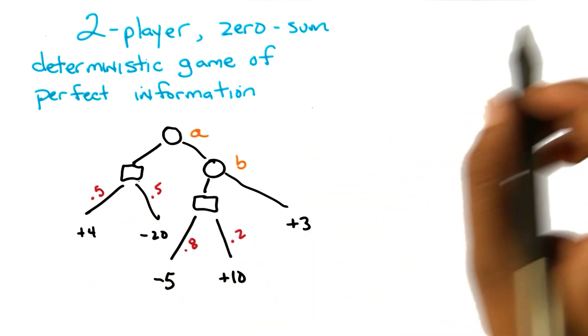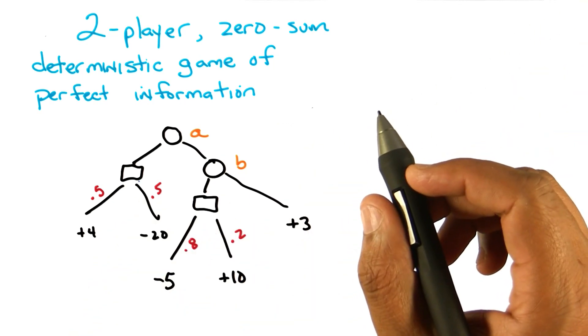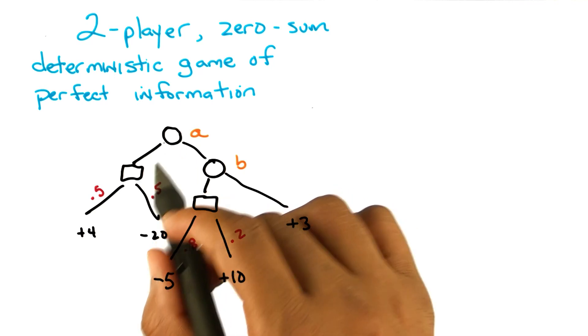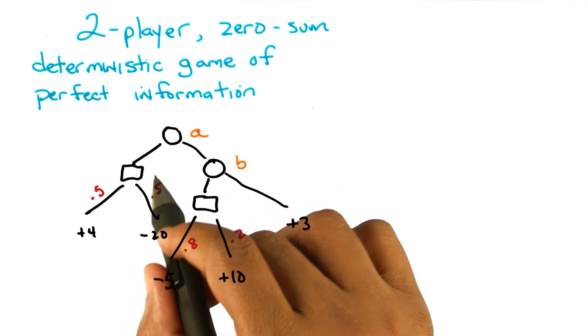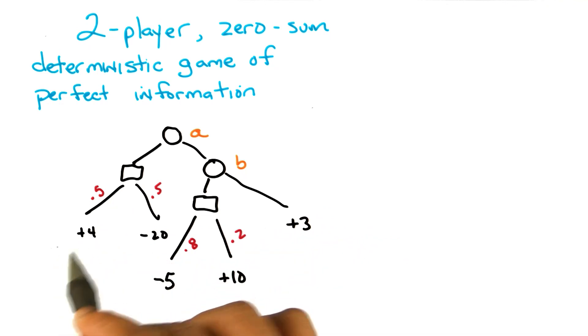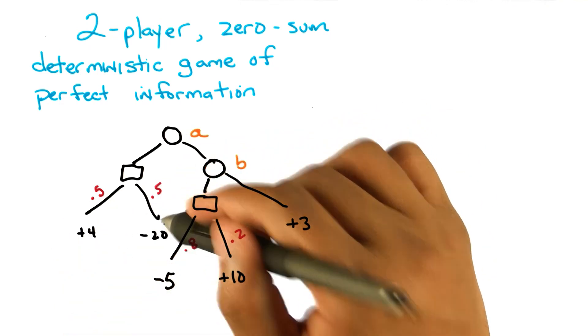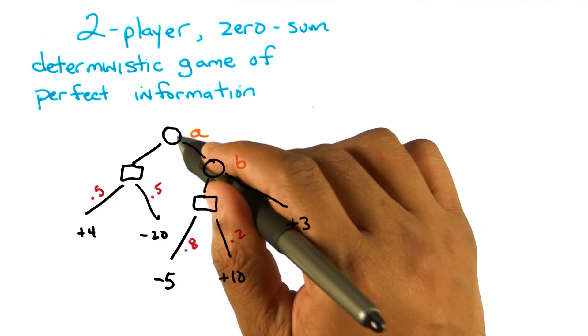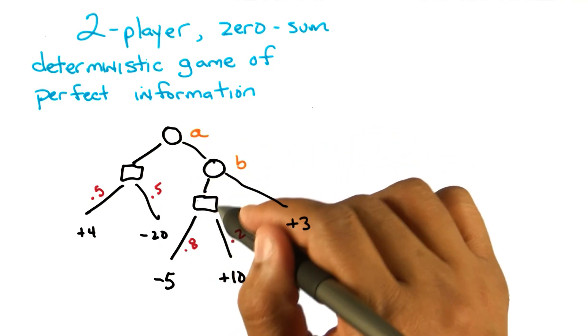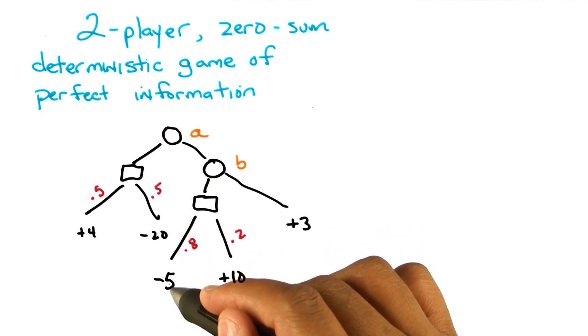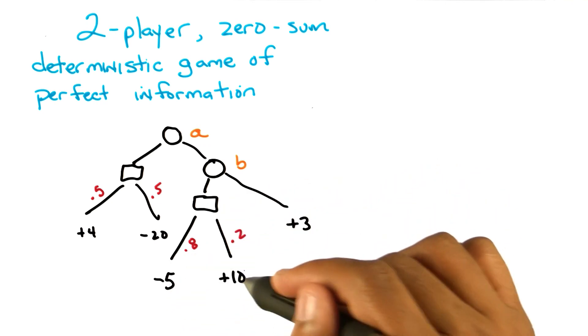I've drawn these little square boxes though to represent chance. So what this means is that if A goes left, you end up in a chance box where you flip a coin and 50% of the time you end up over here and 50% of the time you end up over here. Along a similar vein, if A goes right and then B goes left, then you end up at another chance node and 80% of the time you end up here and 20% of the time you end up here.